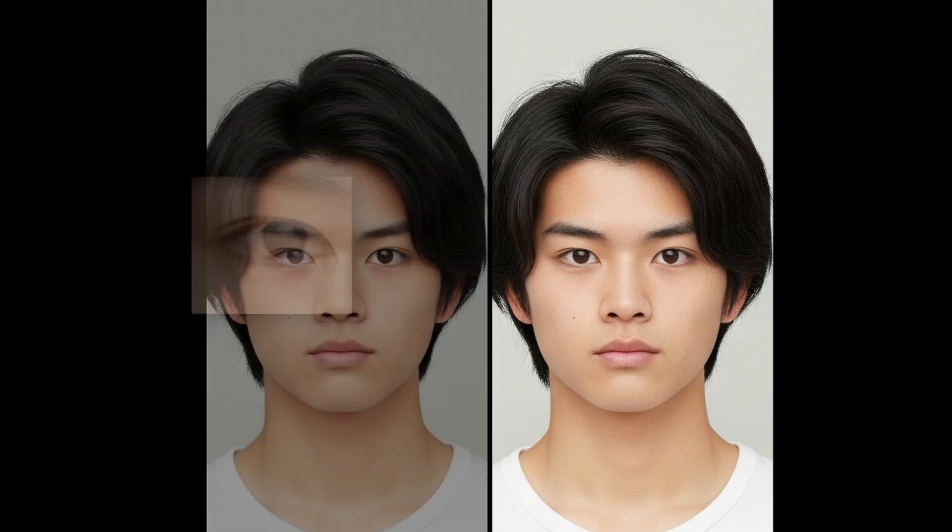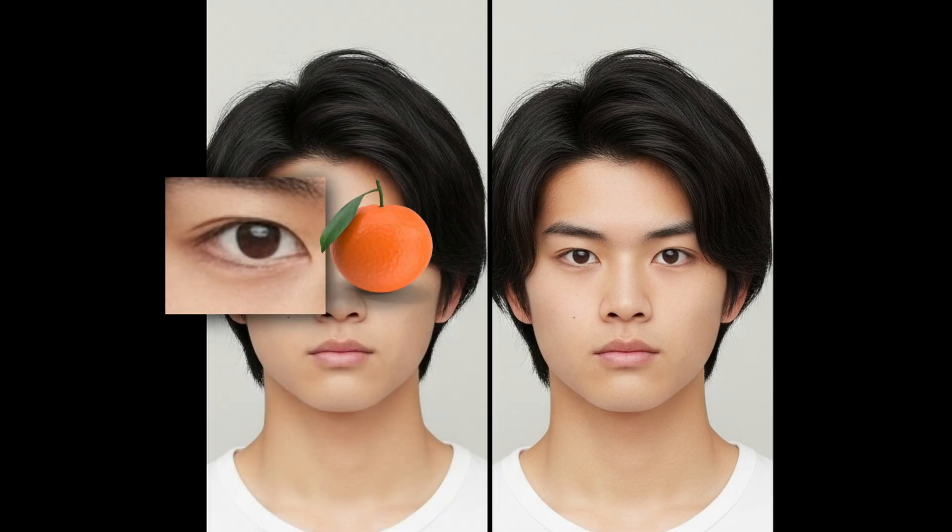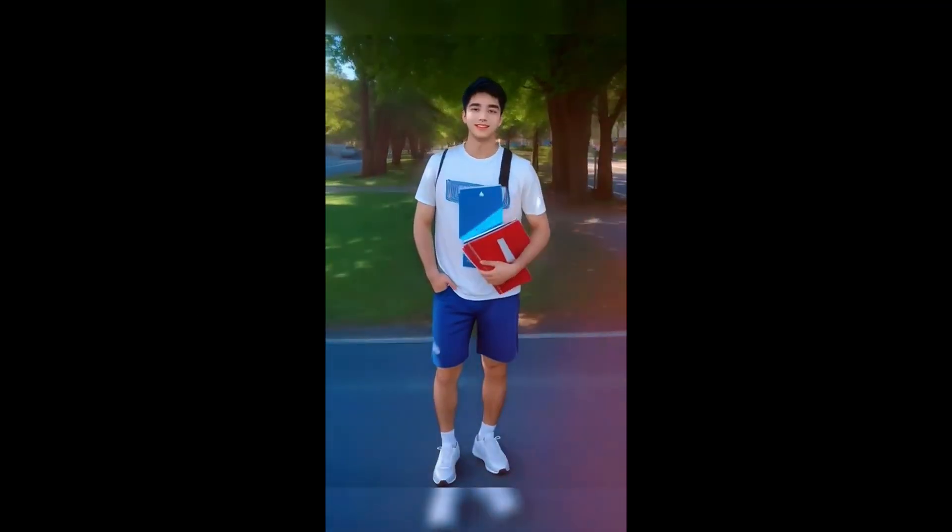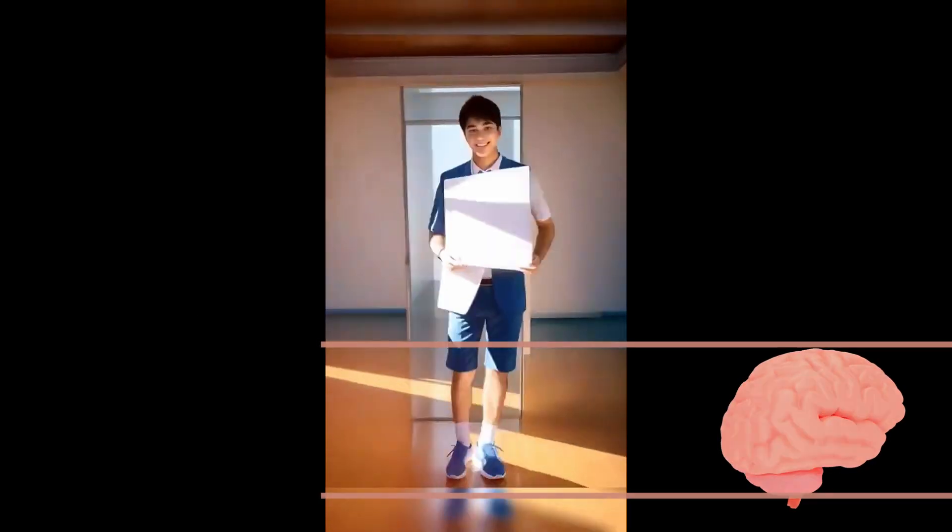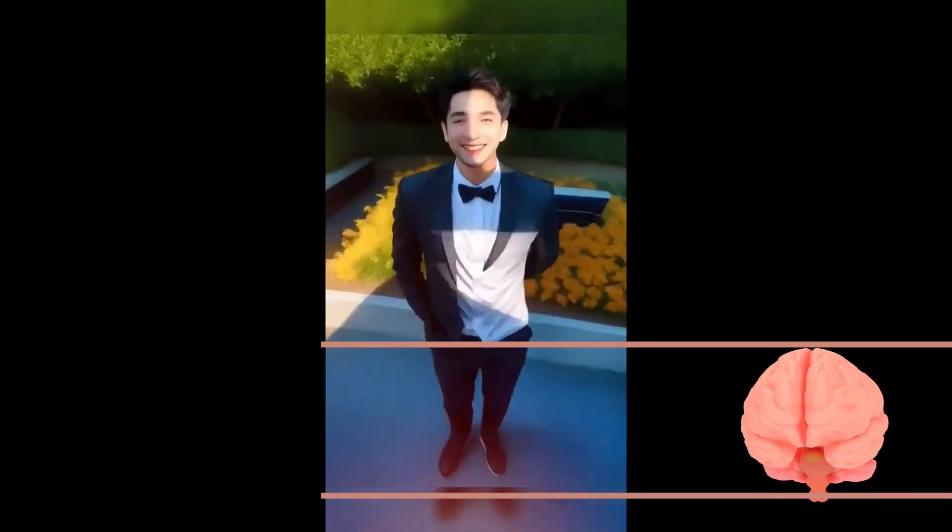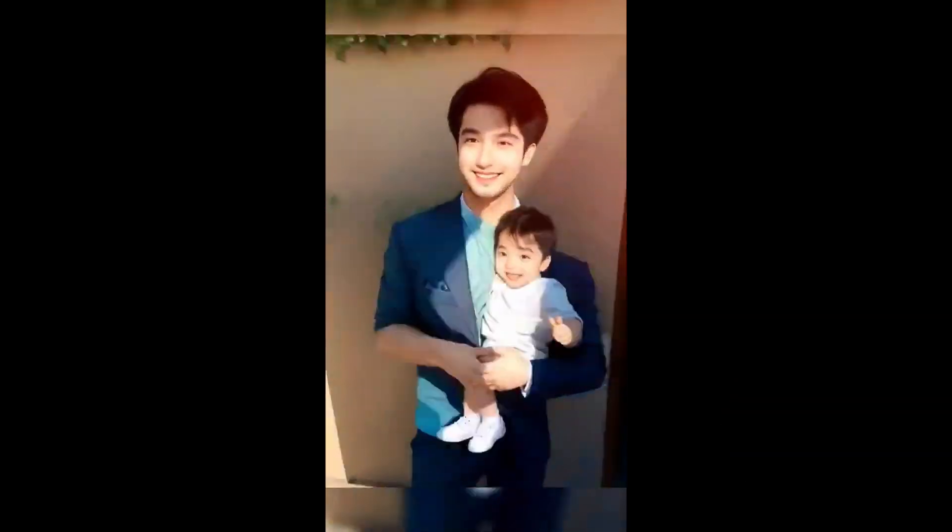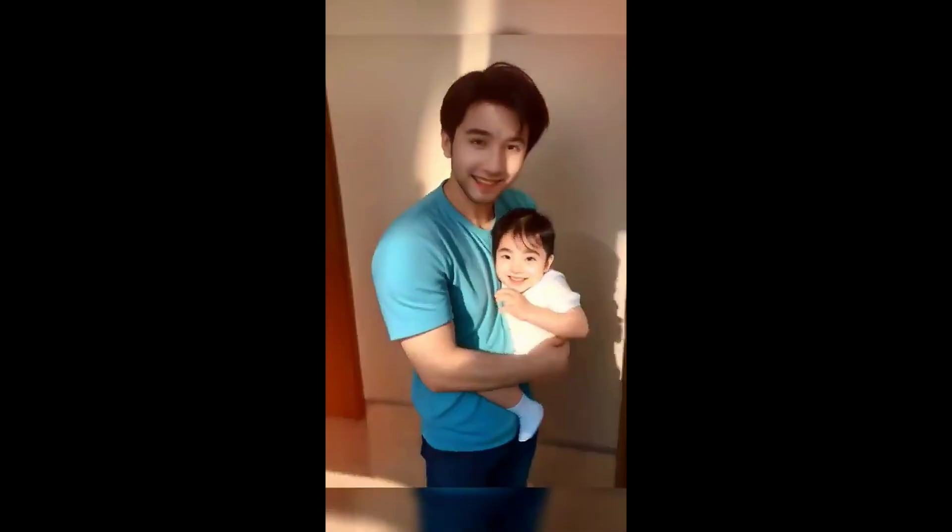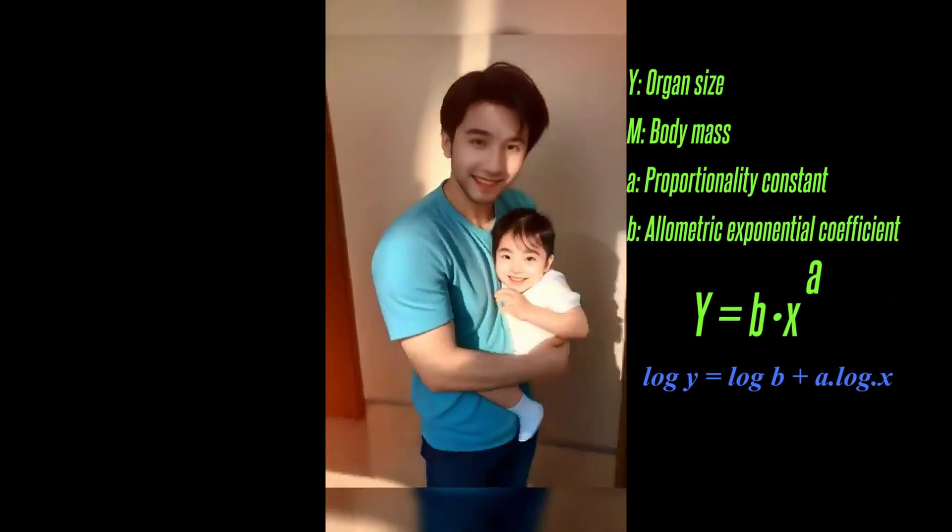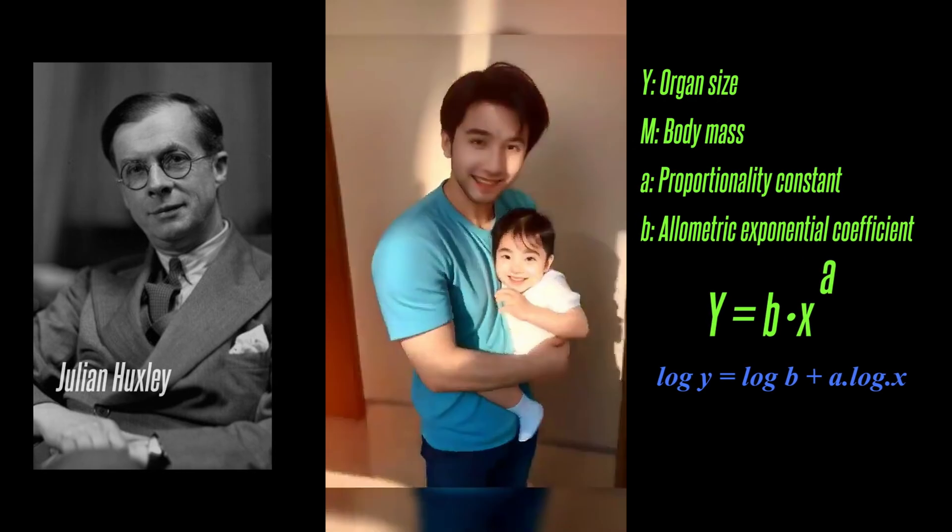If the eye had grown at the same rate as the arm since infancy, an adult human eye would be the size of a tangerine. If we grew at the same rate, our brains would grow as large as our legs. Every organ grows as it was designed. Here is the formula. Allometric equation. Julian Huxley discovers this formula.